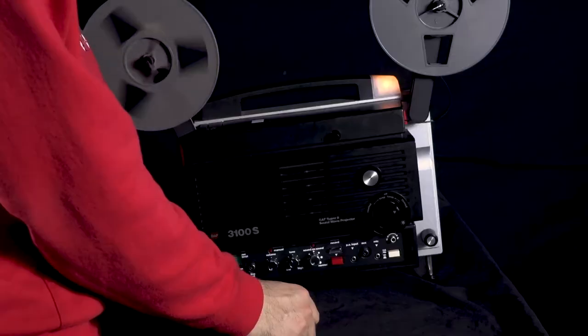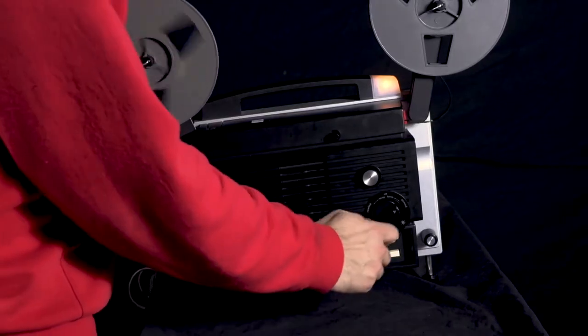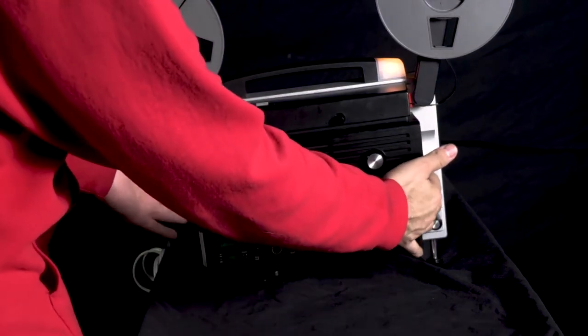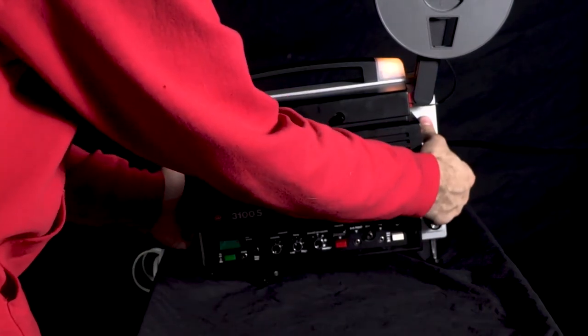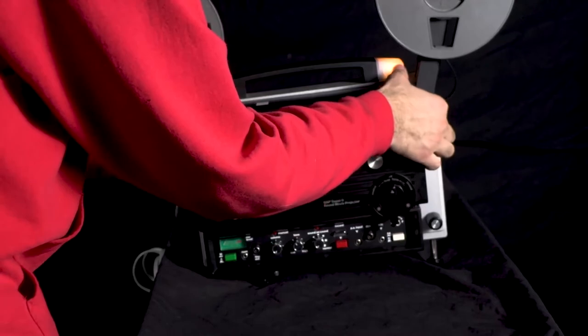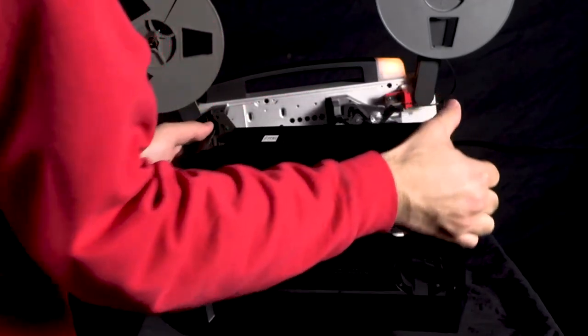If the film doesn't come out the back, turn the projector off. Gently pull on the projector's front covering until it pops out from the projector. There is no lock holding it.